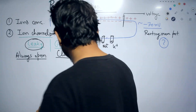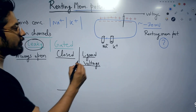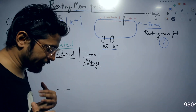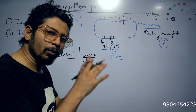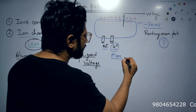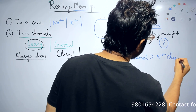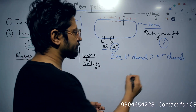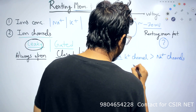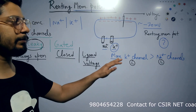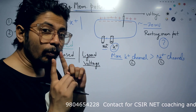Now, among sodium and potassium channels in eukaryotes — for example in the human body — potassium leaky channels are more abundant than sodium leaky channels. There are more potassium channels than sodium channels in the membrane. This is a very important point: we are specifically talking about leaky channels here, and more potassium leaky channels are present than sodium leaky channels.